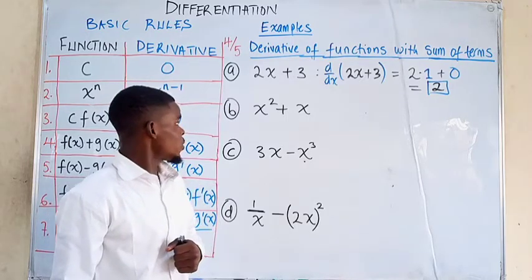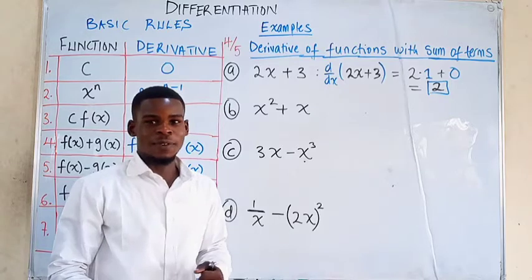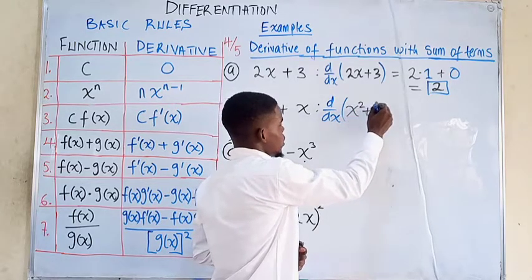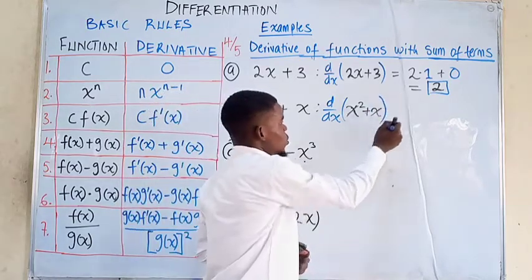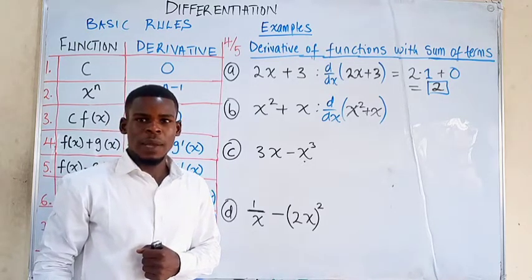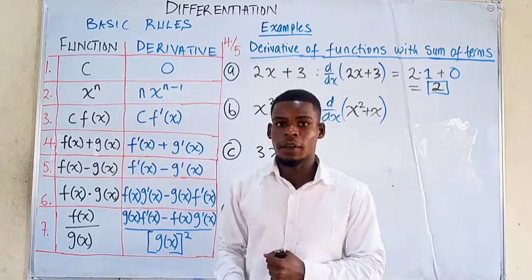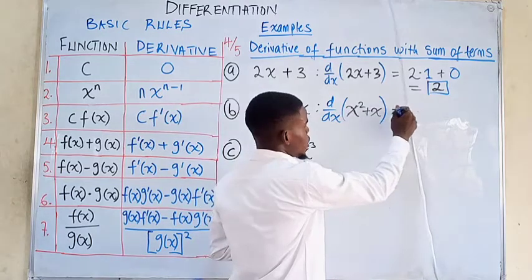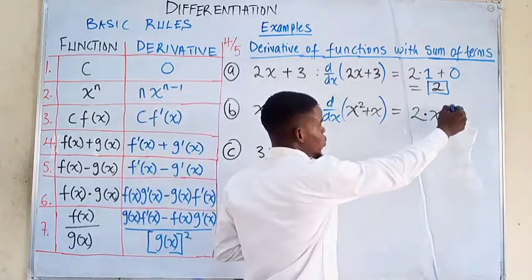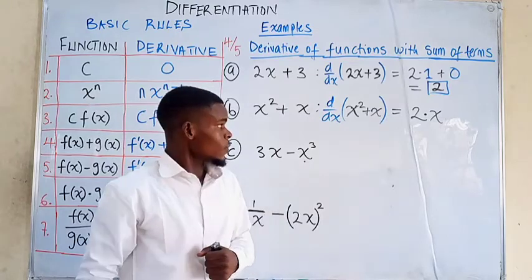The second example is x² + x — that's a quadratic function, but we just apply the rules and break it down. We differentiate x² using the power rule: bring the power 2 down, multiply with x, and subtract 1 from the power. So 2 becomes the coefficient, and the power becomes 2 minus 1, which is 1, giving us 2x.